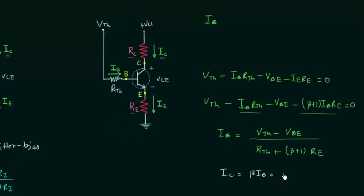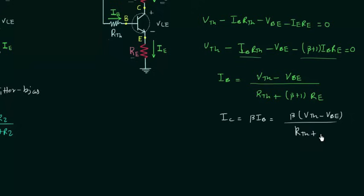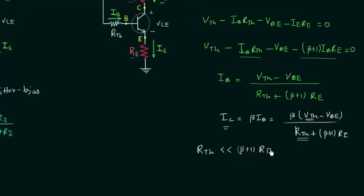The collector current IC is equal to β times VTH minus VBE, divided by RTH plus β plus 1 times RE. In this expression, in place of Vcc we have VTH and in place of RB we have RTH; the remaining terms are similar to the emitter bias configuration. You already know the condition to make IC independent of β: if RTH is smaller than β plus 1 times RE, then IC is independent of β because β cancels from numerator and denominator.